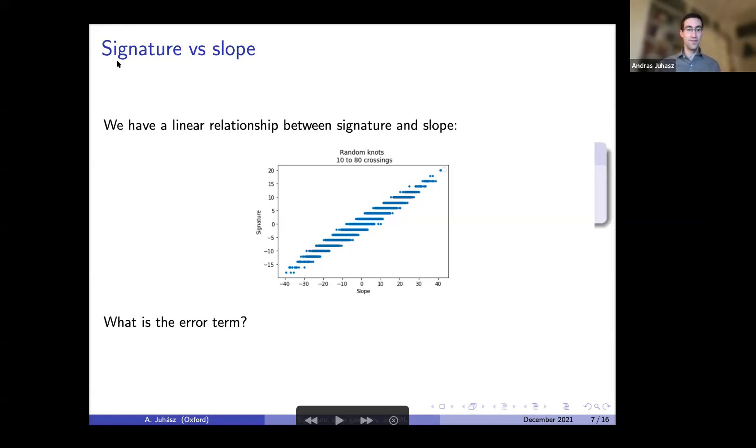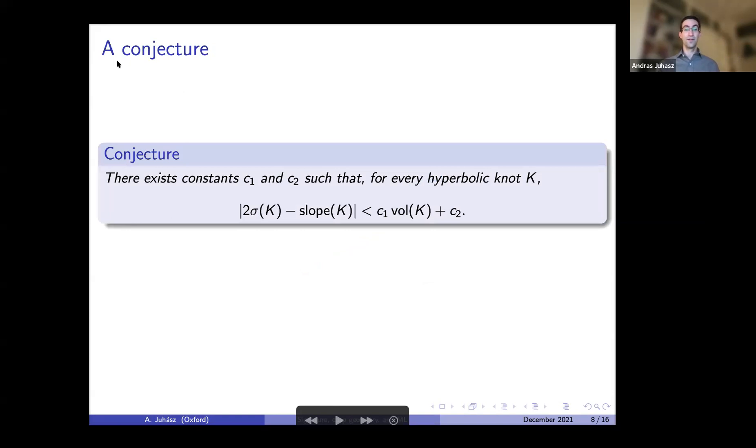Our first conjecture was that the difference between twice the signature and the slope is some linear function of the volume of your knot. This was supported by several large data sets sampled from different distributions. So it seemed like this must be true, but actually we managed to obtain counter examples using highly twisted knots.